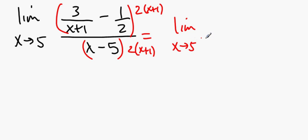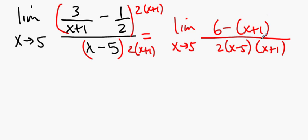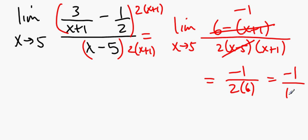And the least common denominator is 2 times x plus 1. Your denominator, let's see, this x plus 1 is going to cancel out with that, leave you with 3 times 2. This 2 is going to cancel out with that 2, leave you with negative x plus 1. Well, what have I got up top? I've got 5 minus x, and that's x minus 5. So the x minus 5 and the 5 minus x leave you with a negative 1 factor. And so I've got negative 1 over, sub in the 5, 2 times 6, and that's negative 1 twelfth.